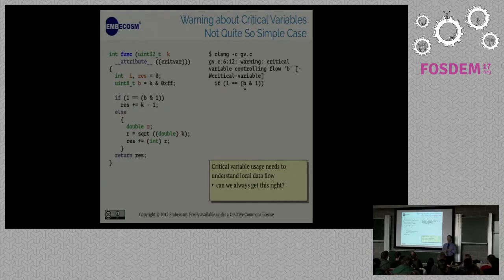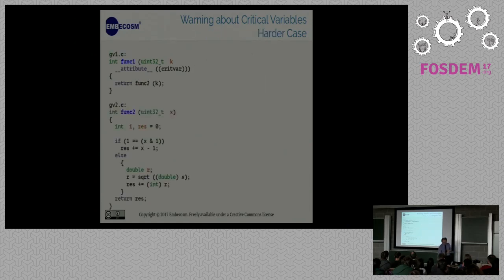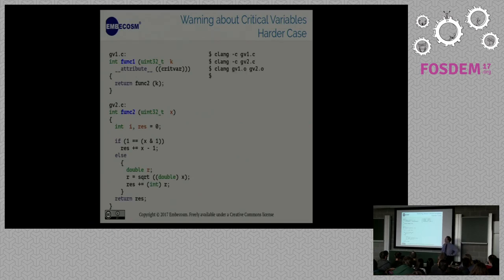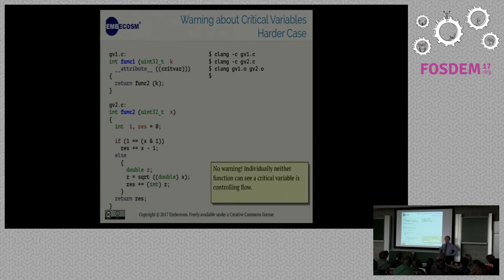But it's not quite so simple. What about this not so simple case, because I actually assign the bottom byte of k to b and then I look at b. Well yes I probably ought to be able to get that right and spot that b, although it's not the actual critical variable, is directly connected to the critical variable and it's still a bad thing to do. But to do that I need to understand the local data flow. This is not something we're going to solve by a simple look at the program, we've got to understand the proper data flow through the program.